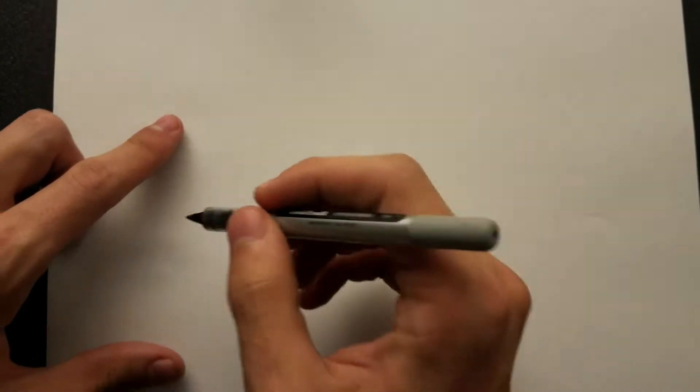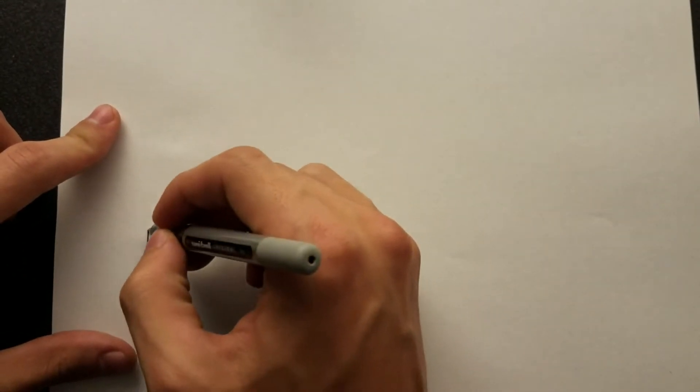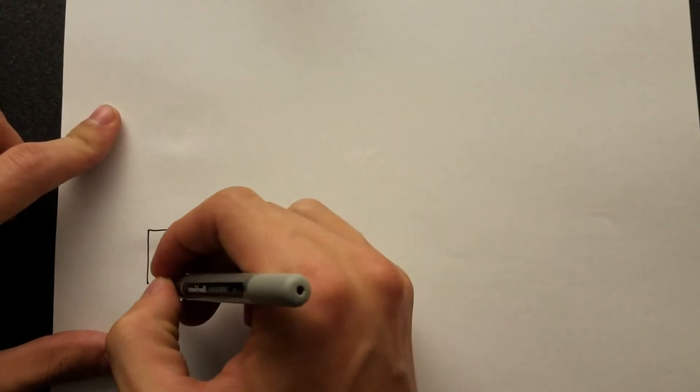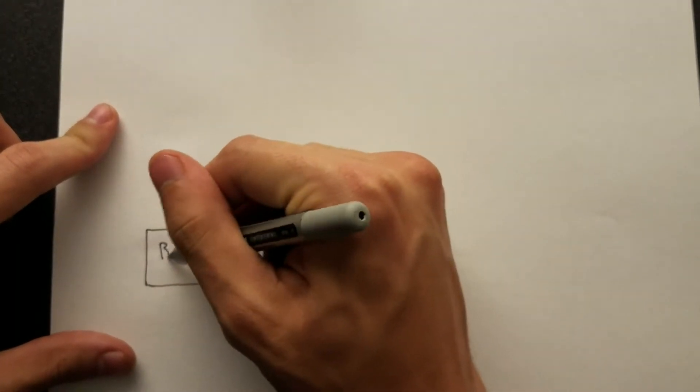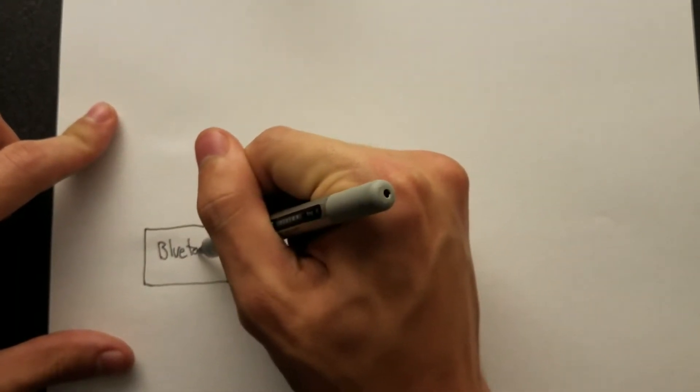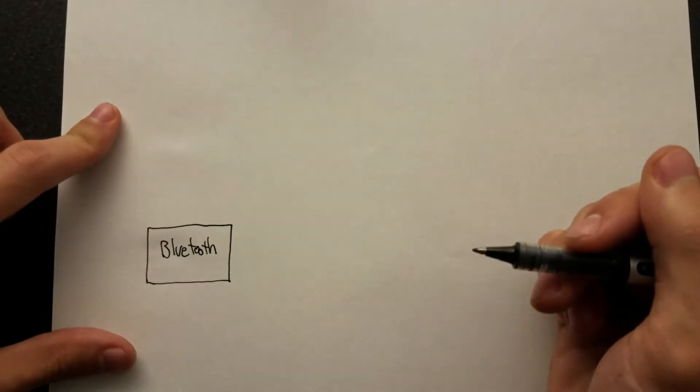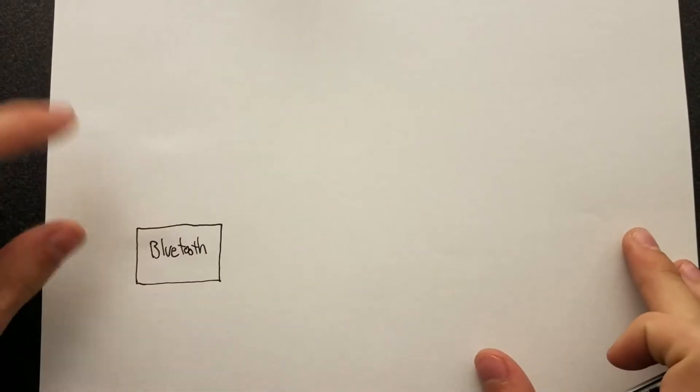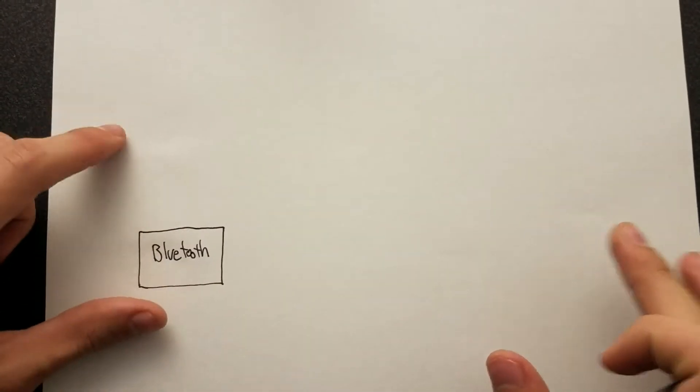Let's draw this. So right now we have this Bluetooth receiver, and that's connected to an Amazon Alexa. So that's the receiver for the Echo. Don't worry too much about that.